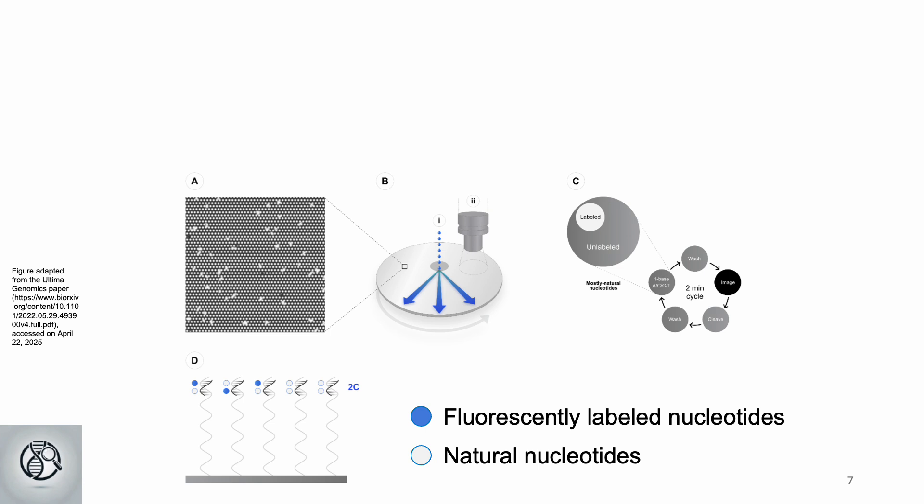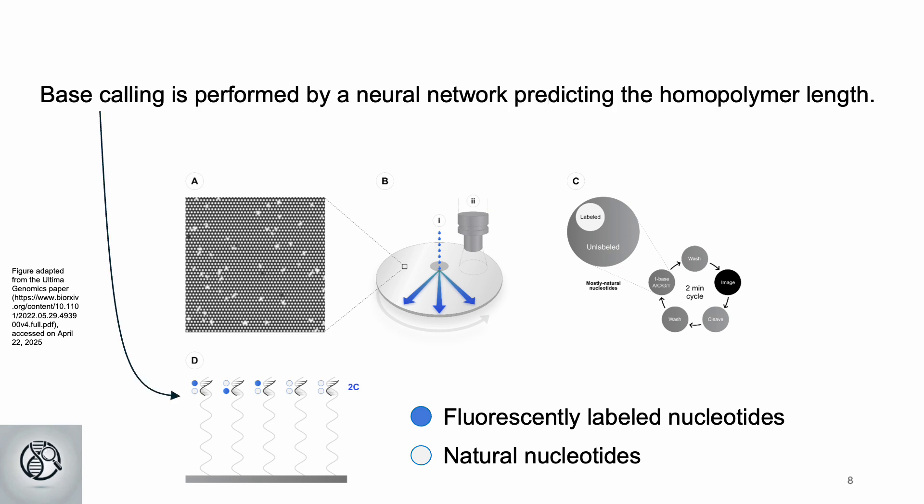Since most nucleotides are natural, some templates may lack labels, but the cluster's collective signal still reflects two cytosines. Note also that base calling is performed by a deep neural network that predicts the most likely homopolymer length.